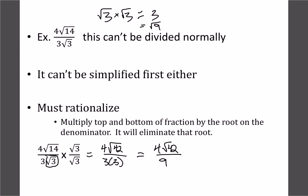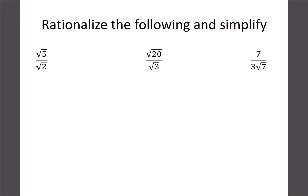Let's do a couple more basic examples. We can't divide them as they are, so we need to rationalize. We multiply by root 2 over root 2 — whatever we do on the bottom we have to do on the top as well. This gives us root 10 over 2, which is fully simplified.